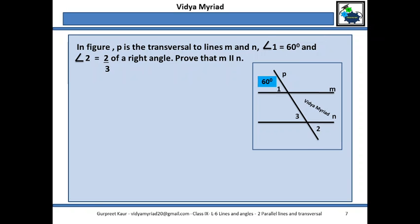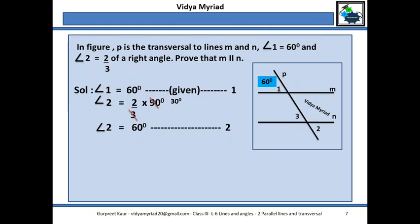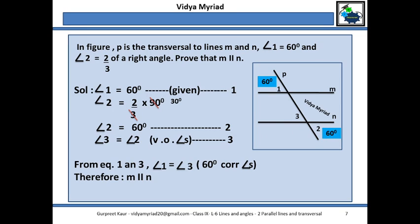Next example: angle 1 is given as 60 degrees and angle 2 is two-thirds of a right angle, and I need to prove that m is parallel to n. Angle 1 is 60 degrees. Angle 2 is two-thirds of a right angle, which means angle 2 is also equal to 60 degrees. Angles 3 and 2 are vertically opposite angles, so angle 3 is equal to angle 2. We can also say that angle 1 is equal to angle 3 because of corresponding angles, which proves that lines m and n are parallel.